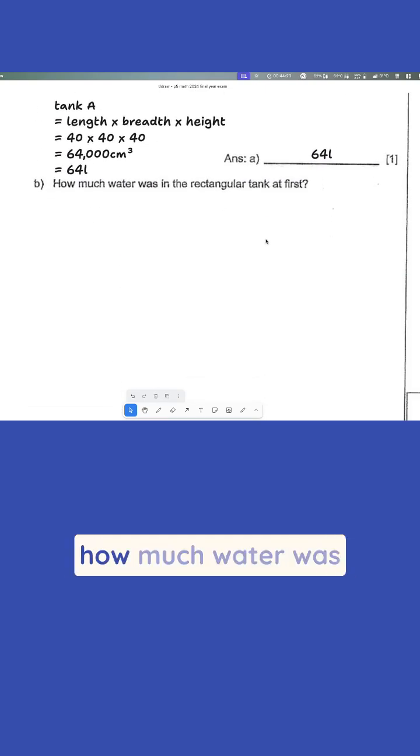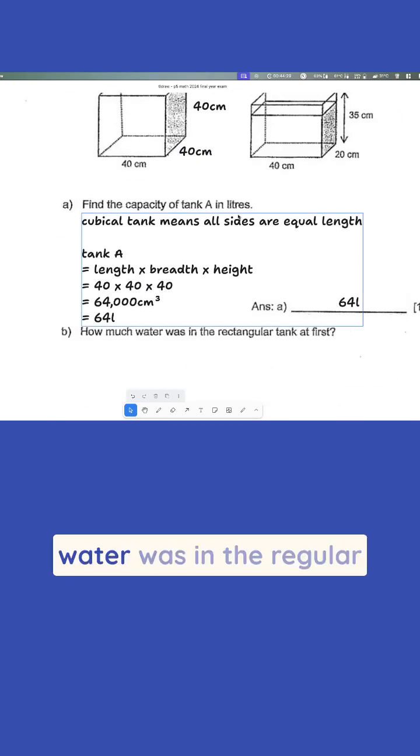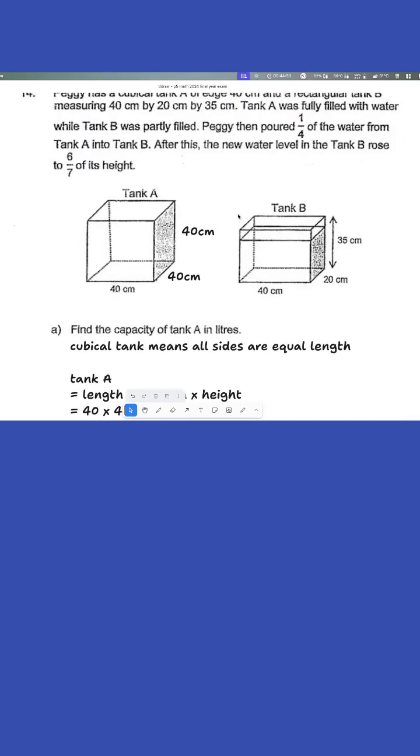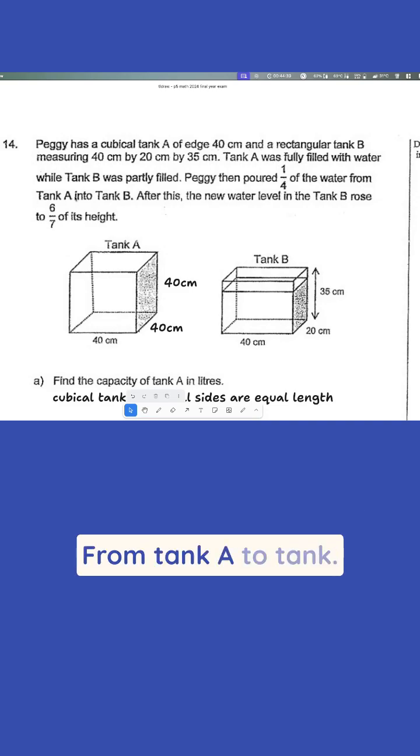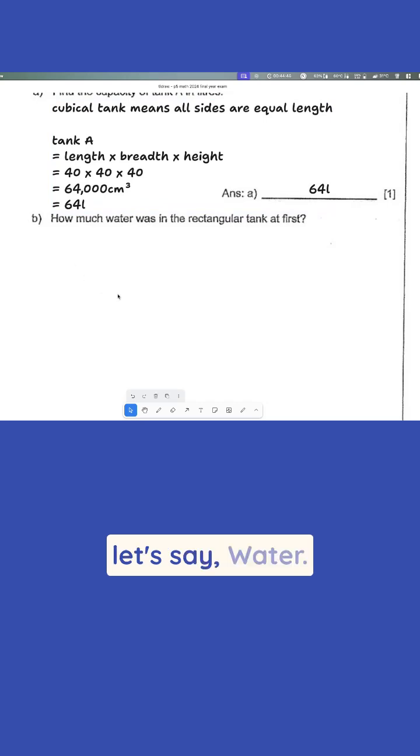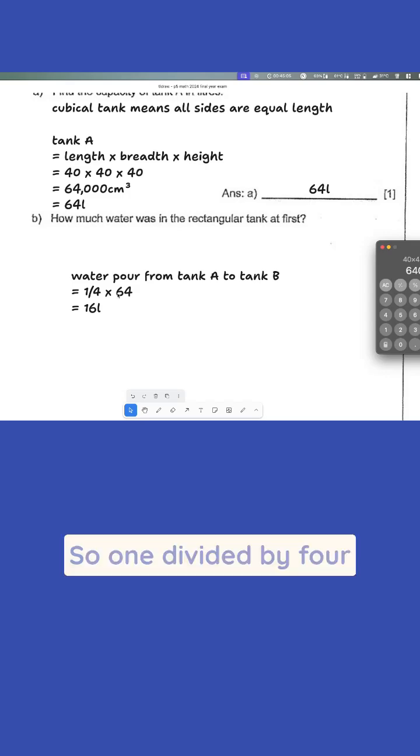All right, so next one is how much water was in the rectangular tank at first? So first is that we know Peggy poured one quarter of the water from tank A to tank B, right? So in this case, water poured from tank A to tank B is equal to one quarter times 64, which is basically 64 divided by 4 is 16 liters. So 1 divided by 4 multiplied by 64, 16 liters.